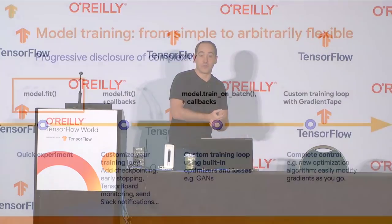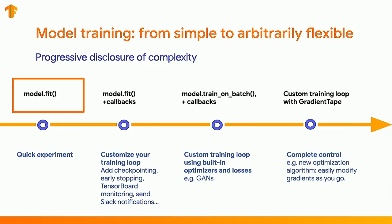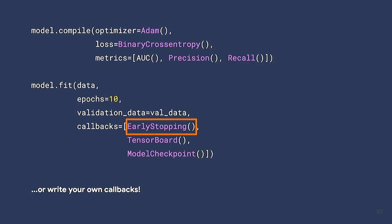There are several ways to train models in TensorFlow 2, and you can use whichever is most helpful for your use case. The first is simply calling model.fit, which works whether you have a sequential, functional, or subclass model — it's fast, performant, and simple. If you're working in a team, using model.fit reduces your code footprint significantly. You can pass in different metrics like accuracy, precision, and recall — TensorFlow 2 has nice built-in metrics for those.